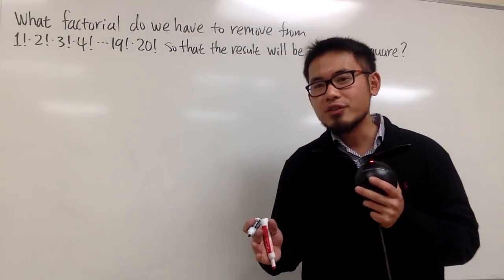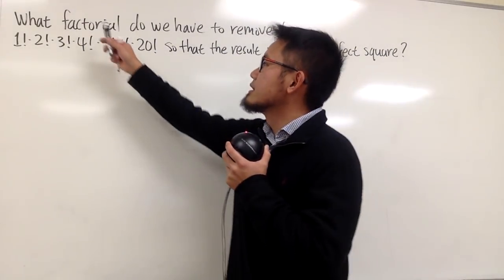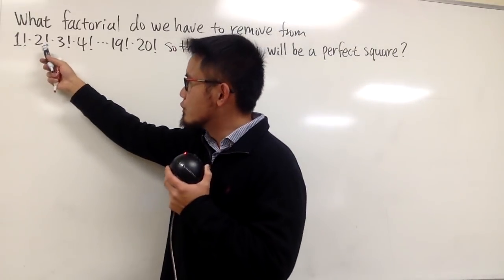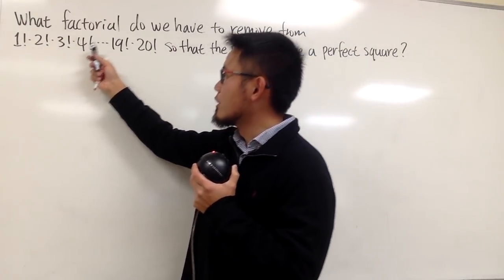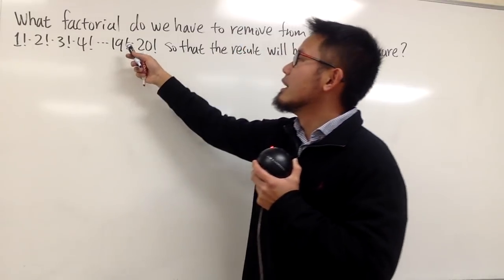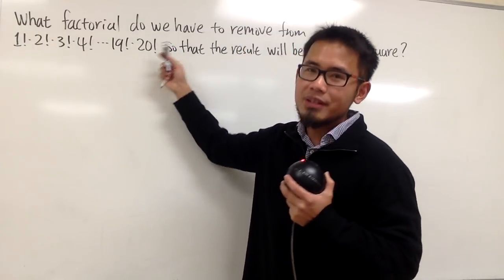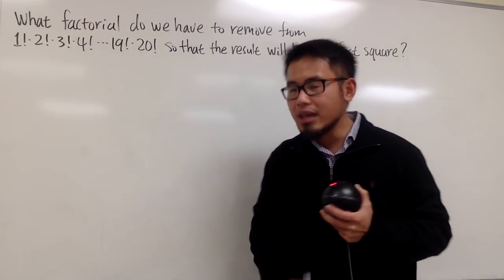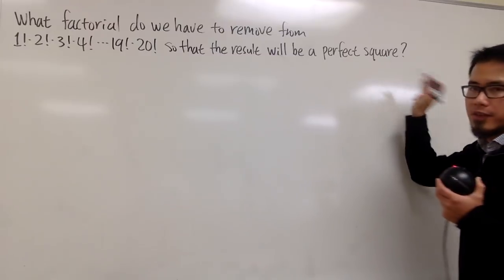Let's do some math for fun! Here we have this question from one of my subscribers. What factorial do we have to remove from the product 1! × 2! × 3! × 4! × ... × 19! × 20! so that after you take that factorial away, the result will be a perfect square?